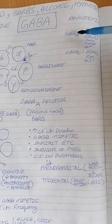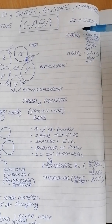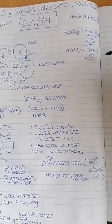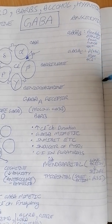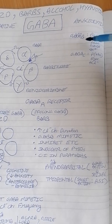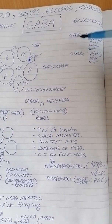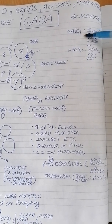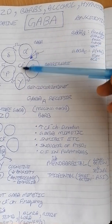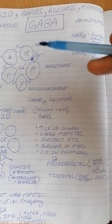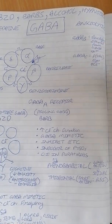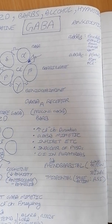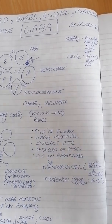GABA-B receptor, which I haven't drawn here, has a role related to baclofen. GABA-C has specificity for the rho subunit and is mainly defined in the eye. GABA-B works through potassium efflux — potassium leaves the cell — causing hyperpolarization. GABA-C works like GABA-A through chloride influx. So for all three, whether chloride influx or potassium efflux, the result is no propagation of action potential.